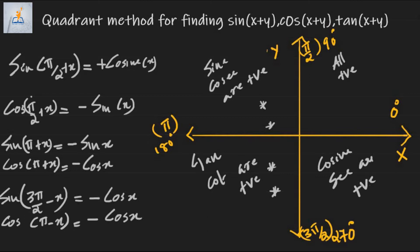In a similar manner, we can find the sum and difference of any angle for any trigonometric function by checking whether it is a sum or difference with an integral multiple of π/2 or an integral multiple of π.